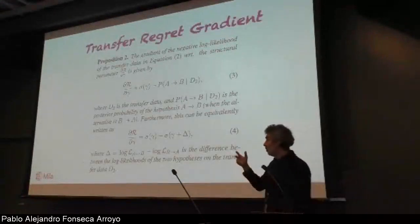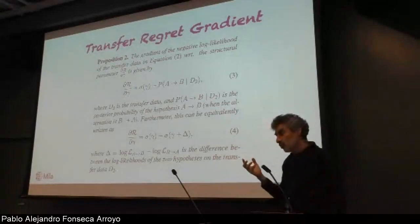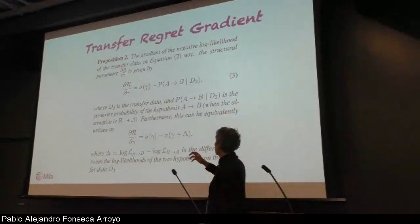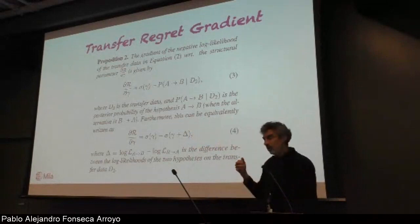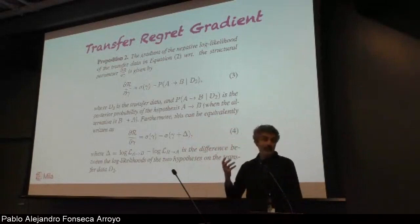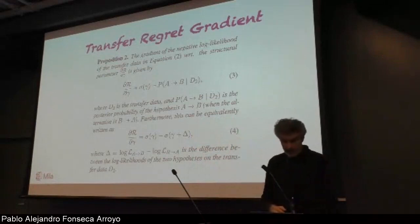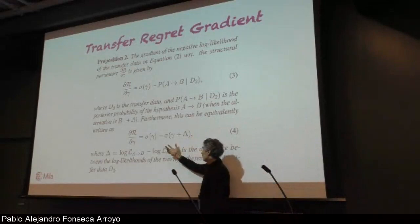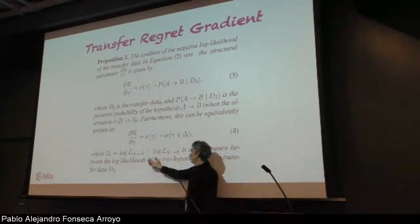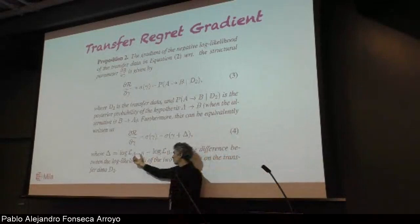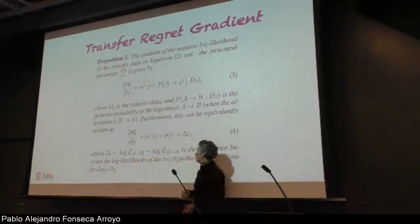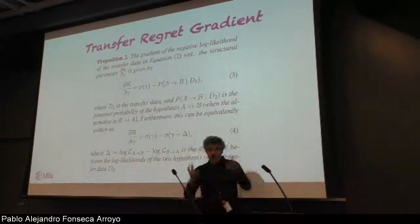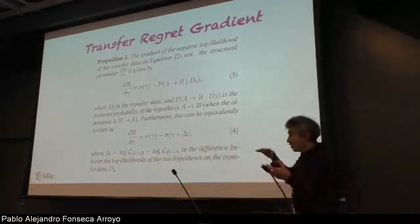We can look at the gradient of that objective with respect to the meta-parameter gamma. Gamma controls our belief of which hypothesis is correct. The gradient pushes the probability sigmoid(gamma) toward the posterior probability that this particular episode gives us about the hypothesis A causes B - it will push up if A causes B adapts faster, and push down in the other case.